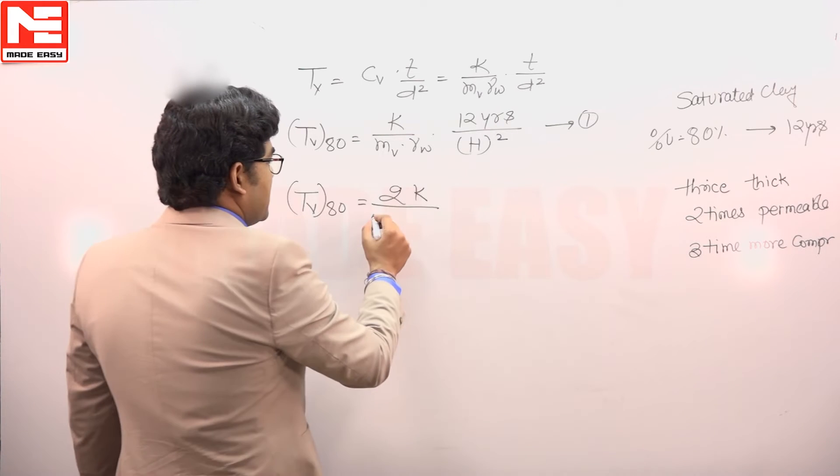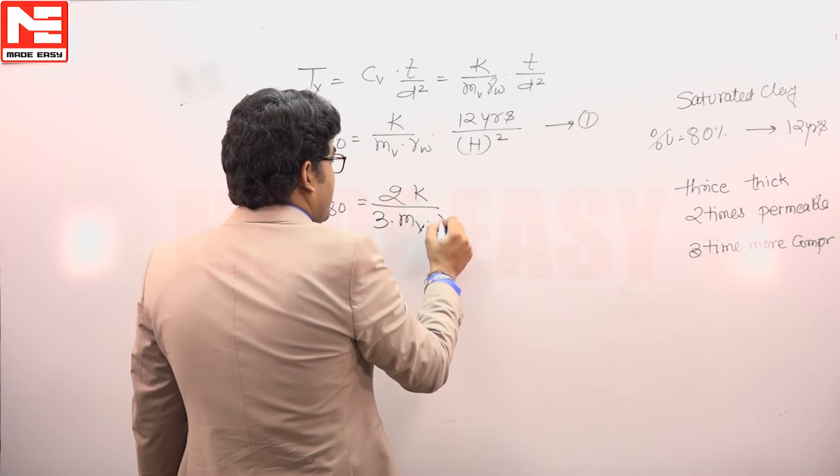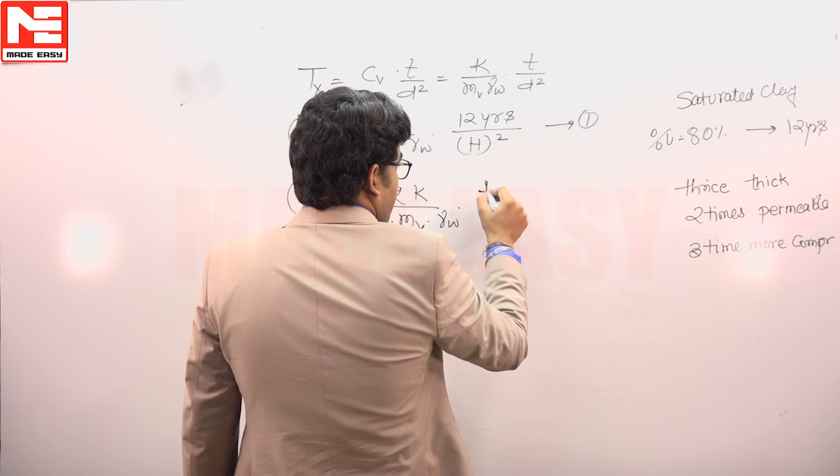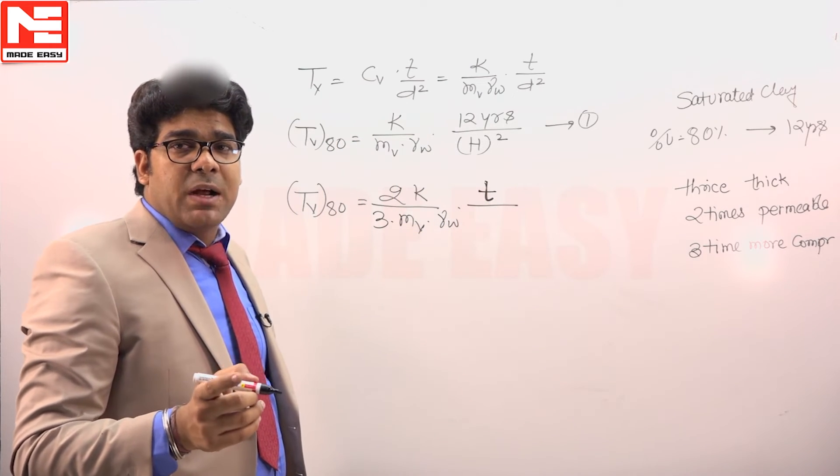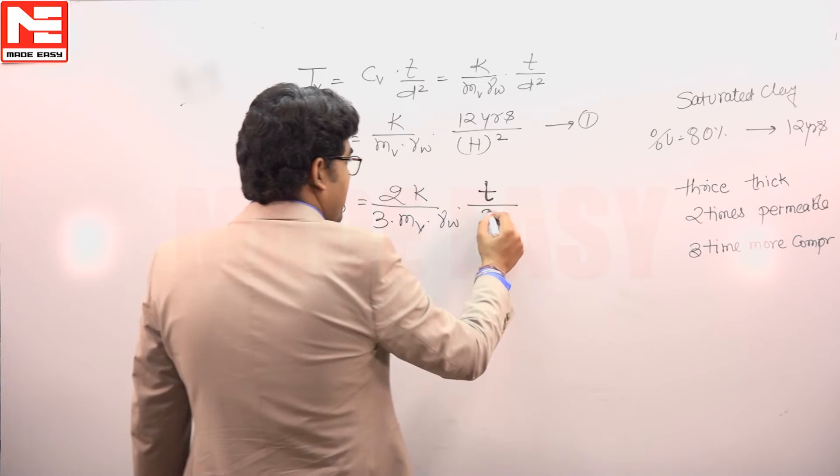So this is 3 into MV into gamma W, and the time relation has been asked in this question. Now the thickness or drainage path gets 3 times, so we can say 3H squared.